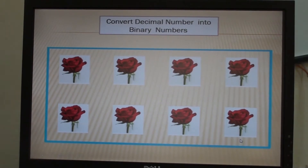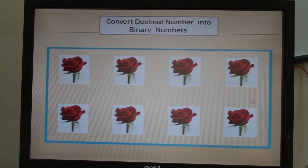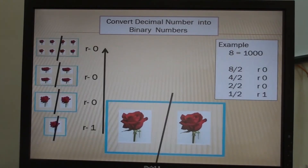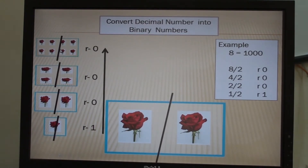Let's take another example. How many roses do we have now? We have 2, 4, 6, 8 — so 8 items of flowers. We will convert decimal number 8 into a binary number. We will divide 8 by 2. So 8 divided by 2 is 4, there is no remainder, so I put R0.